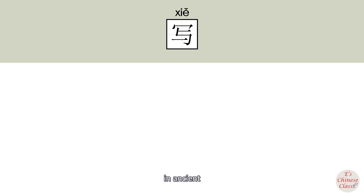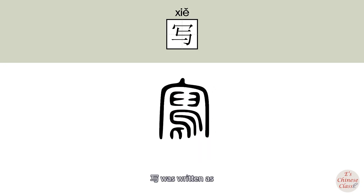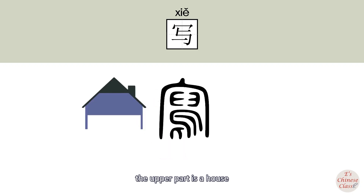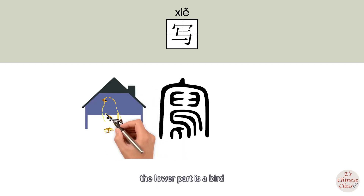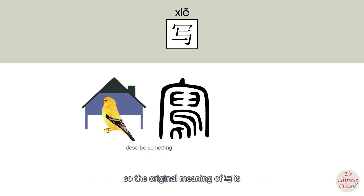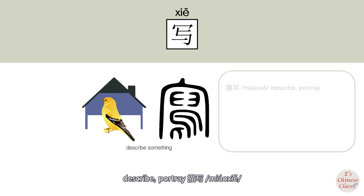In ancient Chinese, xiě was written with the upper part being a house and the lower part being a bird. It indicates a bird calling to describe something. So the original meaning of xiě is 'describe' or 'portray,' as in miáo xiě.